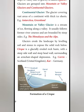Glaciers erode — erode means Aripu — the landscape by leveling soil and stones to expose the solid rock below. It is a classically eroded rock basin with a steep side wall and steep head wall surrounding an armchair-shaped depression. Armchair means Kai Vaitha Irkai. Example: Corrie.